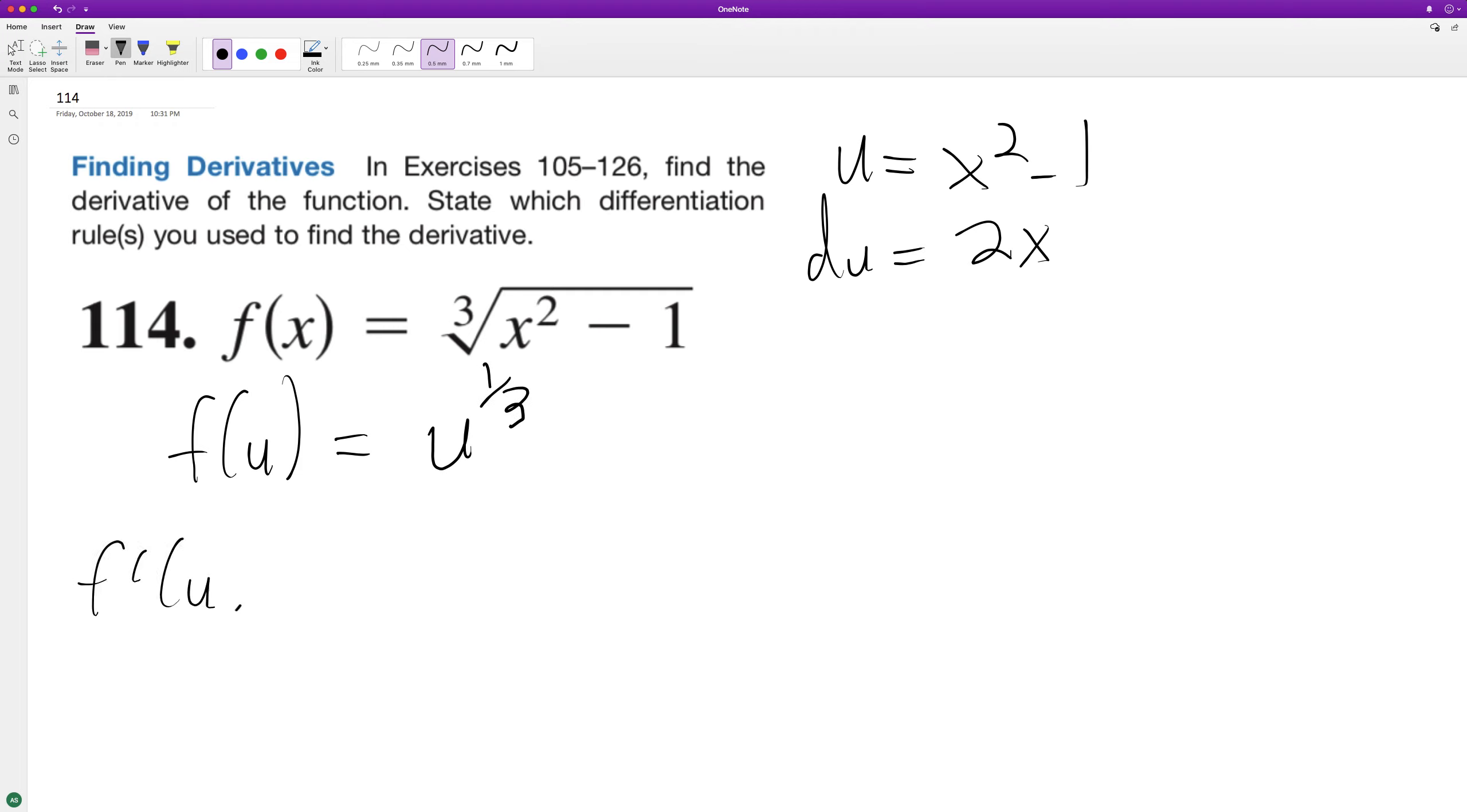So f prime of u is going to be equal to 1 third. Bring that down and subtract 1. So we get u raised to the negative 2 thirds.